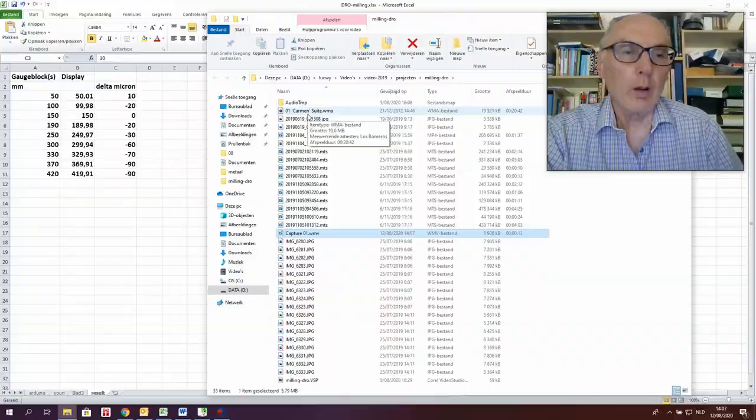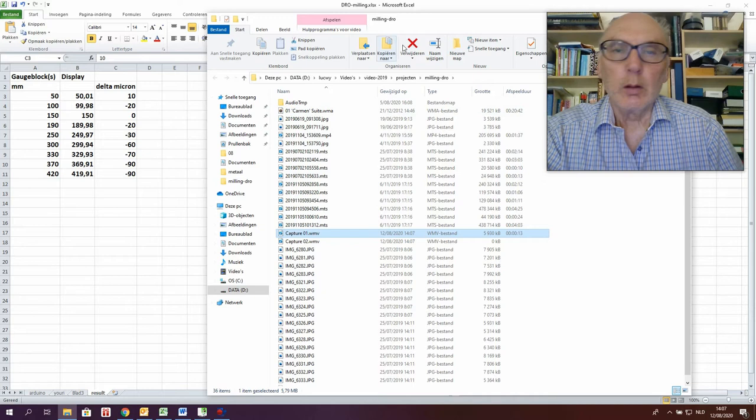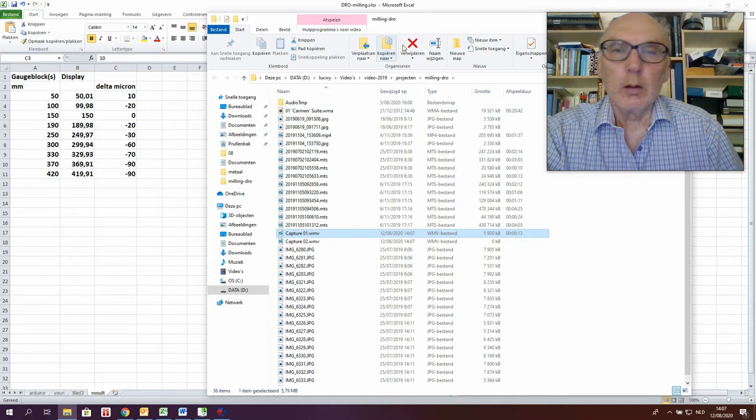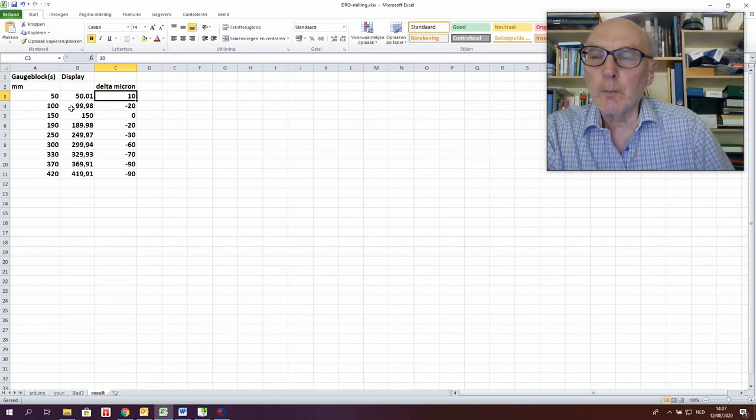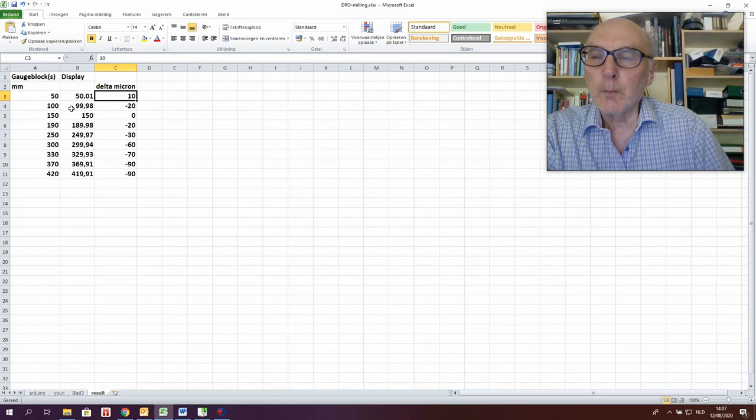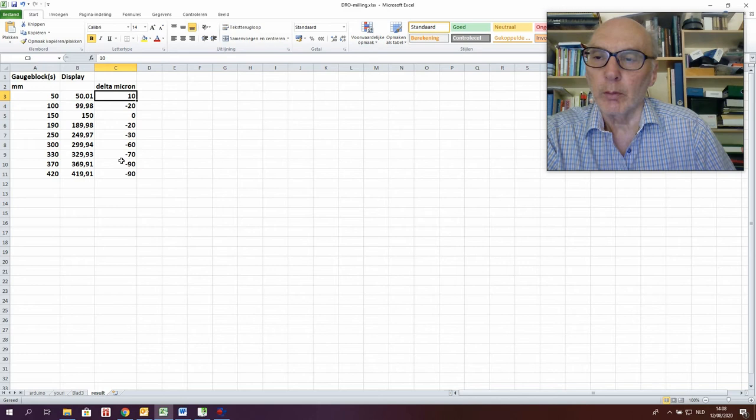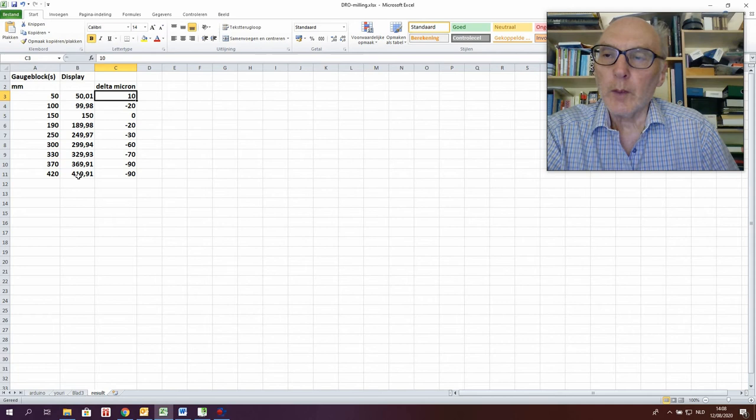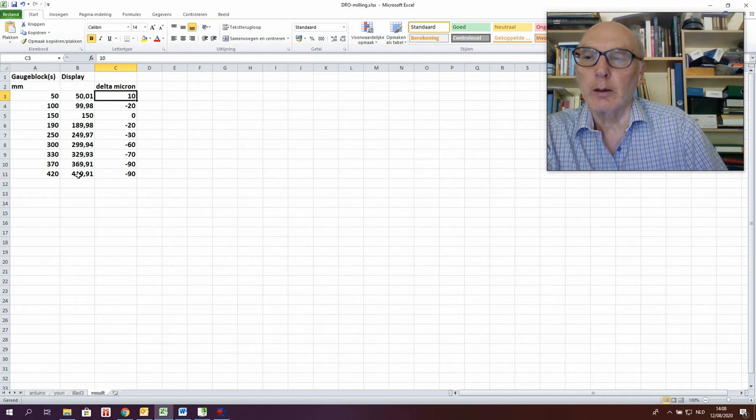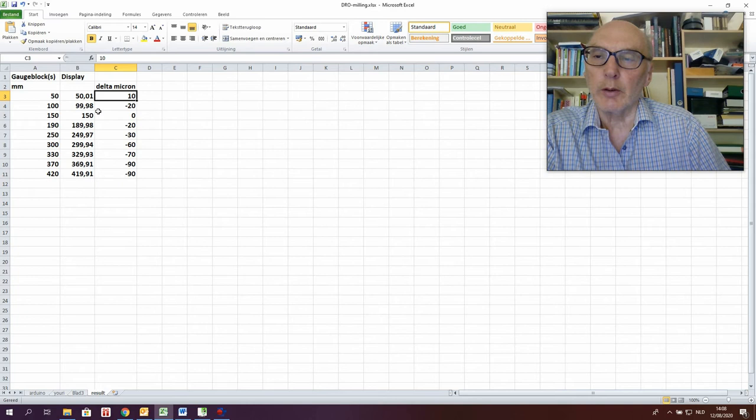Hello, I want to jump to some conclusions. We have here the distance of the gauge blocks, the length of the gauge blocks, and here we have the figures on the display. You see, this is the delta in microns. You see there is a slight difference over longer distances. So the iGaging rules are not linear. But with this error I can live with. So in the lower range it is okay, but at the higher range it takes more delta.